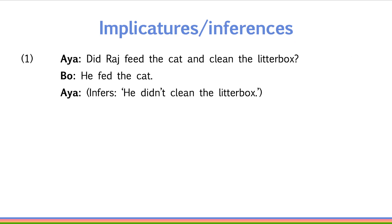The basic idea of why we get this implicature in this context is that if Raj had fed the cat and cleaned the litter box, Bo would have said so. He didn't in this case, so Aya can infer that only Raj fed the cat is true and that Raj cleaned the litter box is false.